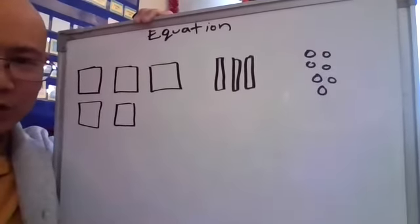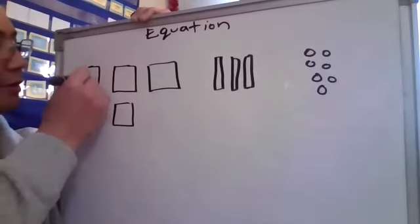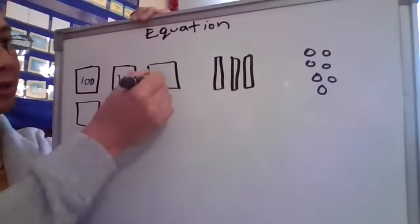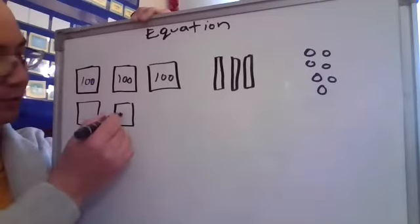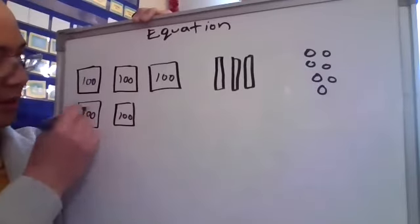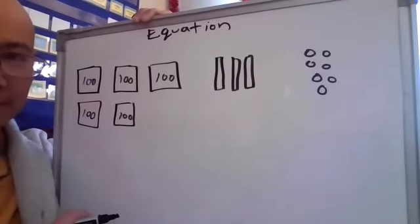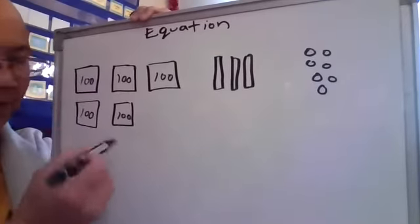Let's make an equation. Well, here I have 100, 100, 100, 100, and 100. Now I can say 1, 2, 3, 4, 5.